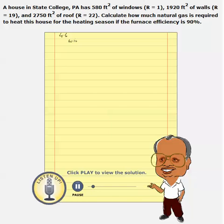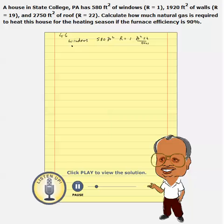Starting with windows. Do we have all the parameters that are required? Basically area, HDD, and R. Area is given as 580 square feet, and R value is also given as 1. We need to know the HDD. Since the house is located in State College, HDD happens to be 6,000.